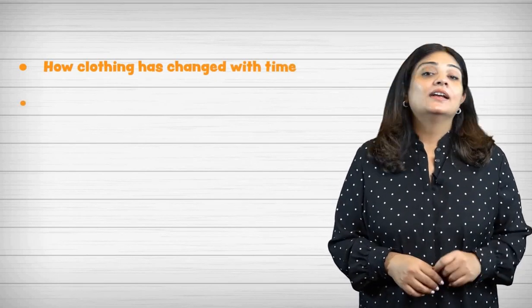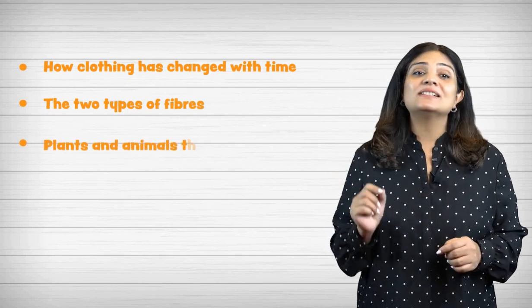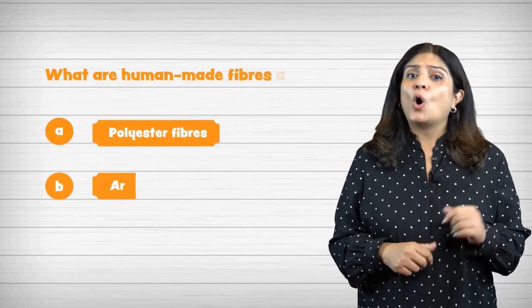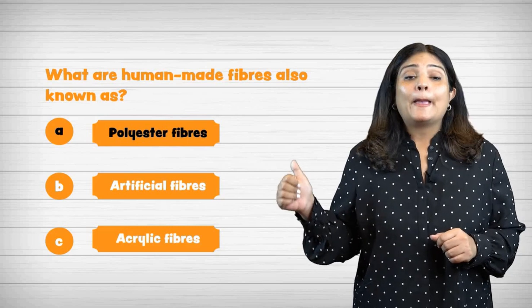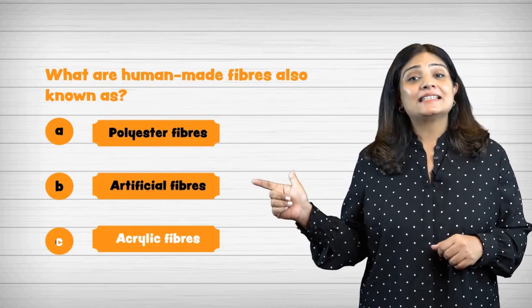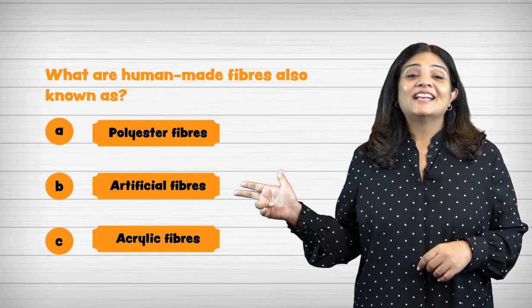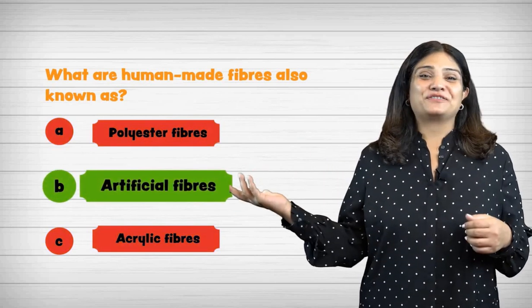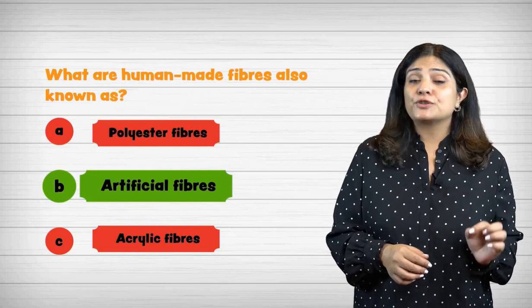So far we have learned how clothing has changed with time, the two types of fibers, and the different plants and animals that give us fabric. Quick quiz: What are human-made fibers also known as? The correct answer is artificial fibers. Human-made fibers are also called artificial fibers or synthetic fibers. Polyester and acrylic are examples of artificial fibers.